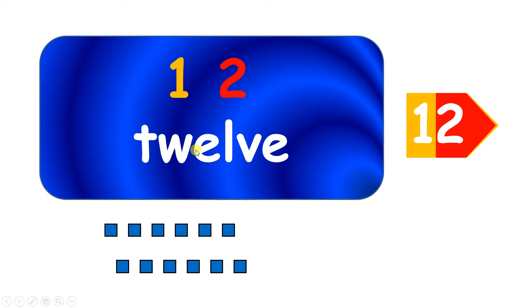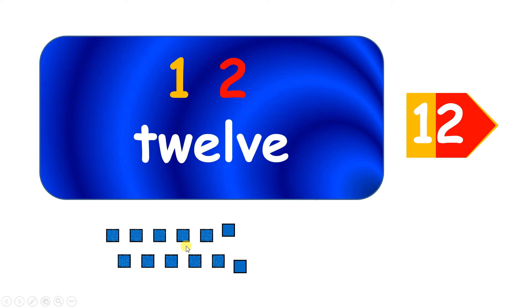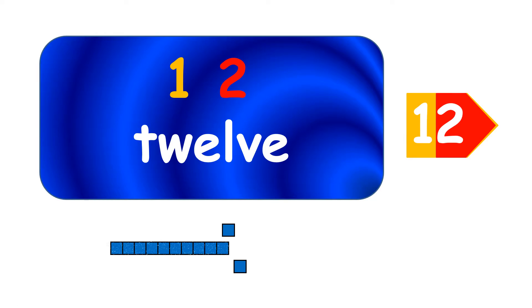Next we have twelve. Now why do you think we write the number twelve with the digits one, two? Well, we can push ten blocks together to make a line and then we've got two left over, so that's why we have the digits one — because we've made one line — and two because we've got two left over.